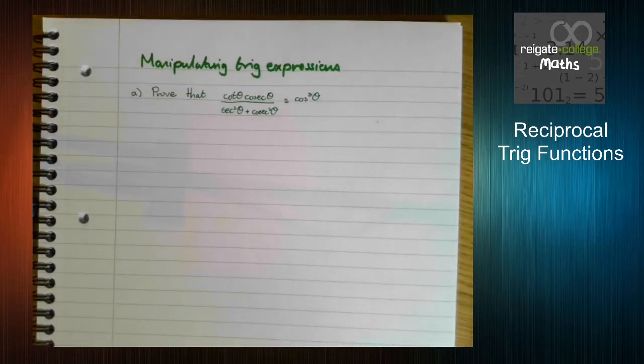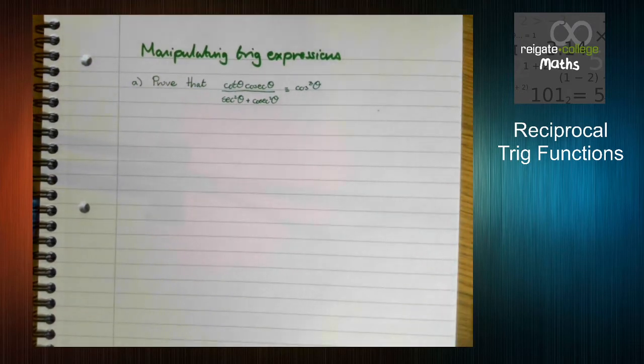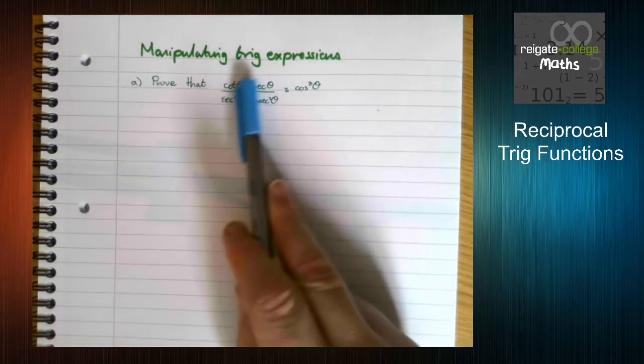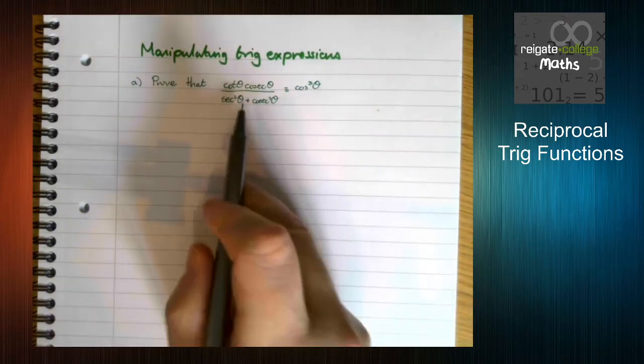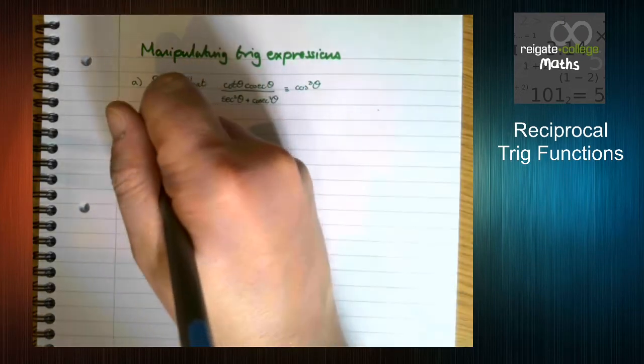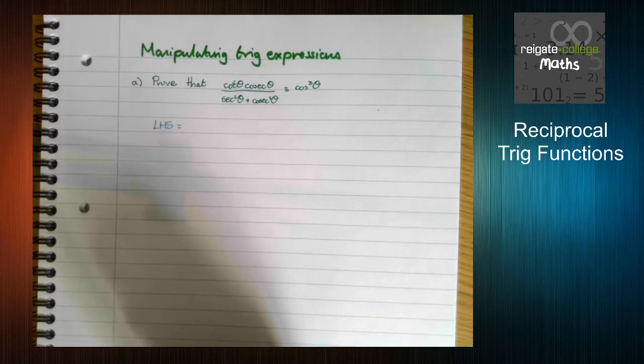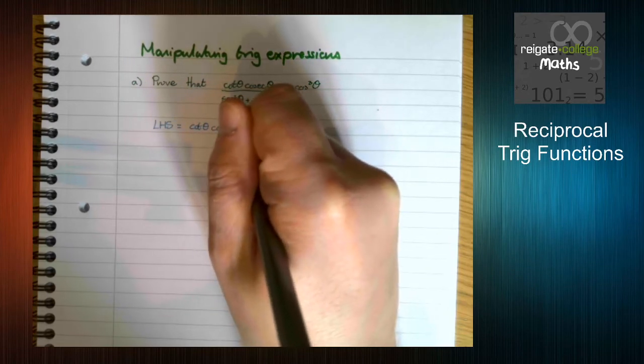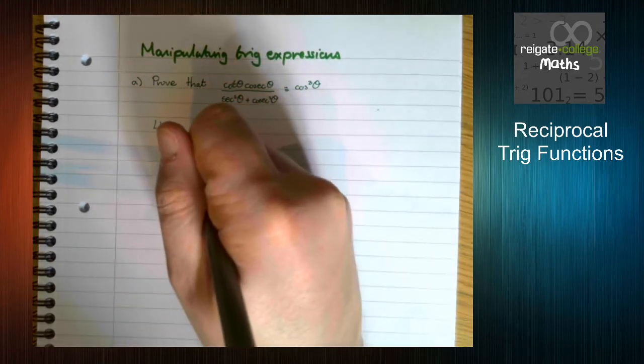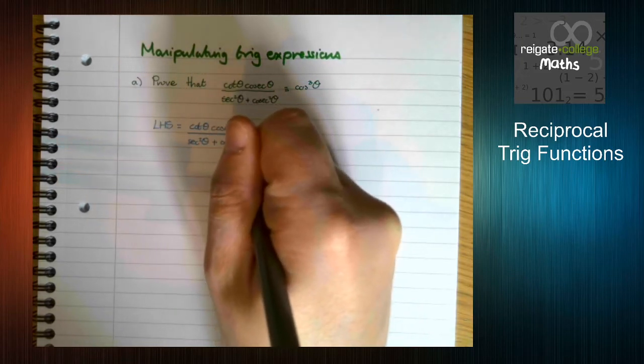The last type of example we're going to do for this video is this type of question here, which is all about manipulating trig expressions. We're going to do this in a lot more depth in a later video when we start looking at trig identities. But for now, let's have a look at this question. So we are trying to prove that this expression on the left is equal to cos cubed θ. Because we're trying to prove that one thing is the same as another, we're going to start with one side, the left-hand side. So the left-hand side is cot θ cosec θ over sec squared θ plus cosec squared θ.